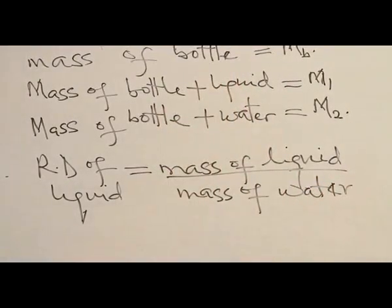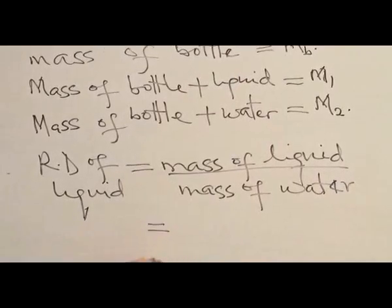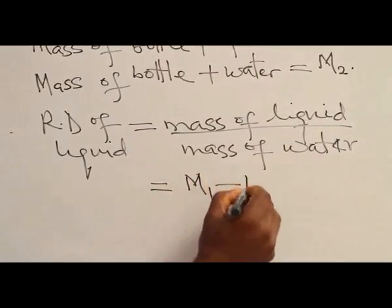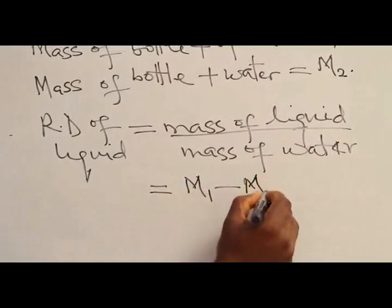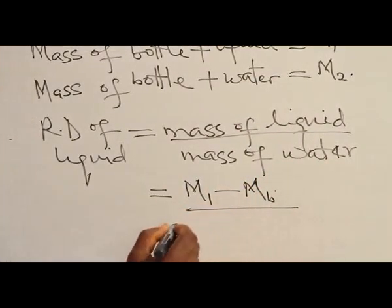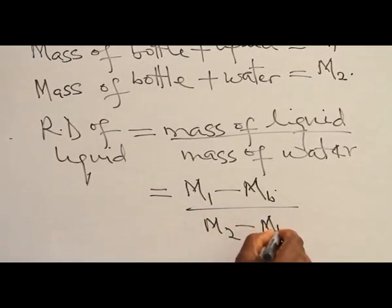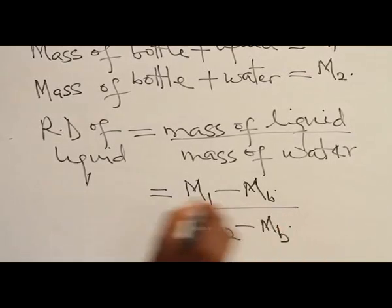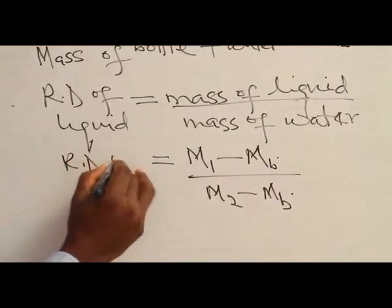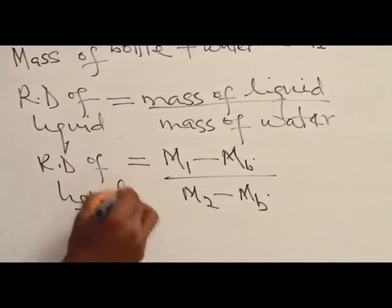If I apply the information above, it will now be equal to: the mass of the liquid is m1 minus mb, divided by m2 minus mb, which gives us the mass of the water. With this information, the relative density of the liquid can easily be calculated.